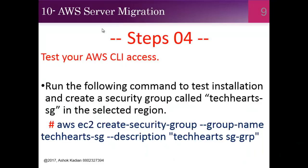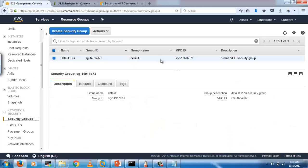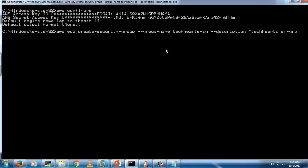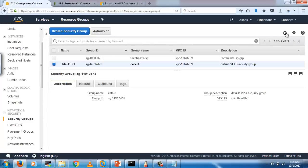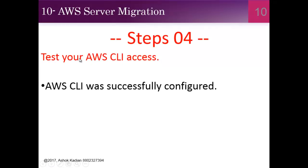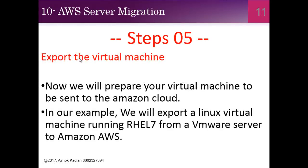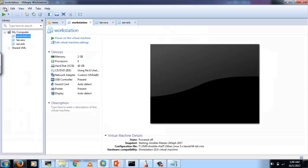AWS CLI has now been configured. To verify it, run the following command to test the installation. We also need to configure security groups — there is one default security group, so let me create another one. The new group ID has been generated. AWS CLI is successfully working.